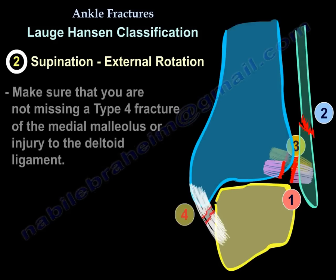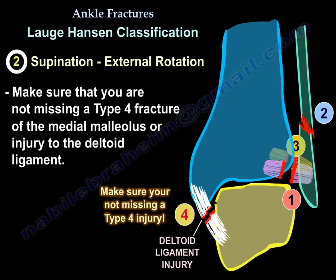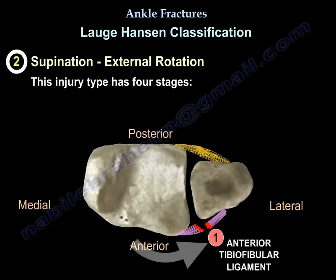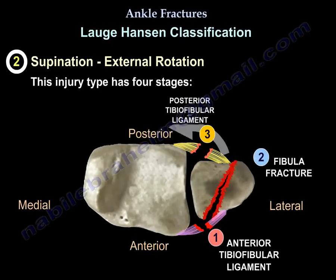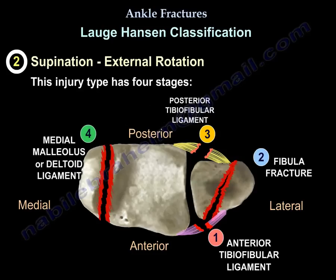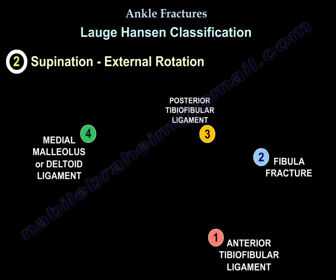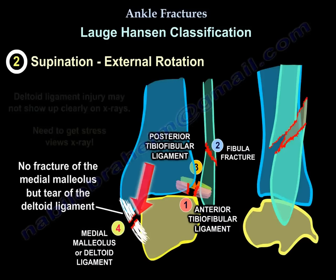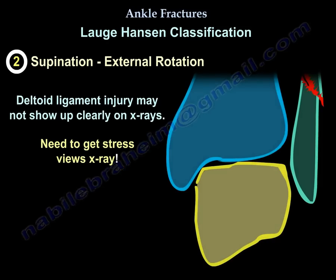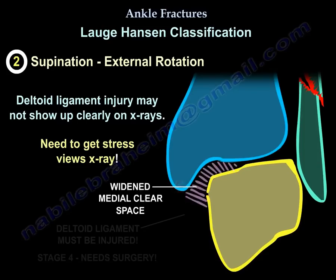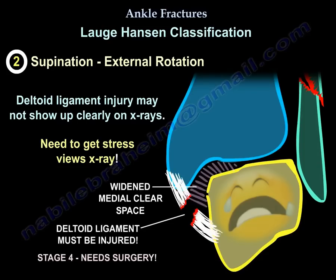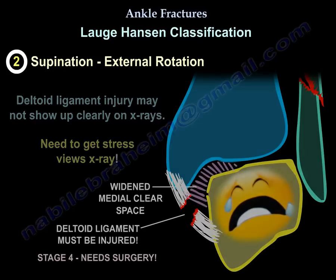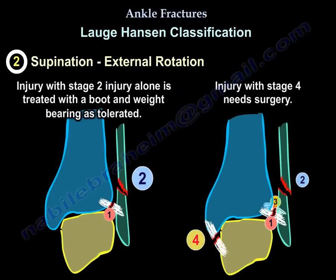You want to confirm whether it is supination-external rotation type 2 or type 4 and make sure you are not missing type 4. This injury has four stages. Stage 4 involves the medial side — if there is a medial malleolus fracture it will show on X-ray, but a deltoid ligament injury may not be clearly visible. That is when you want stress views, because if it is stage 4, surgery is indicated. Stage 2 alone can be treated with a boot and weight bearing as tolerated.